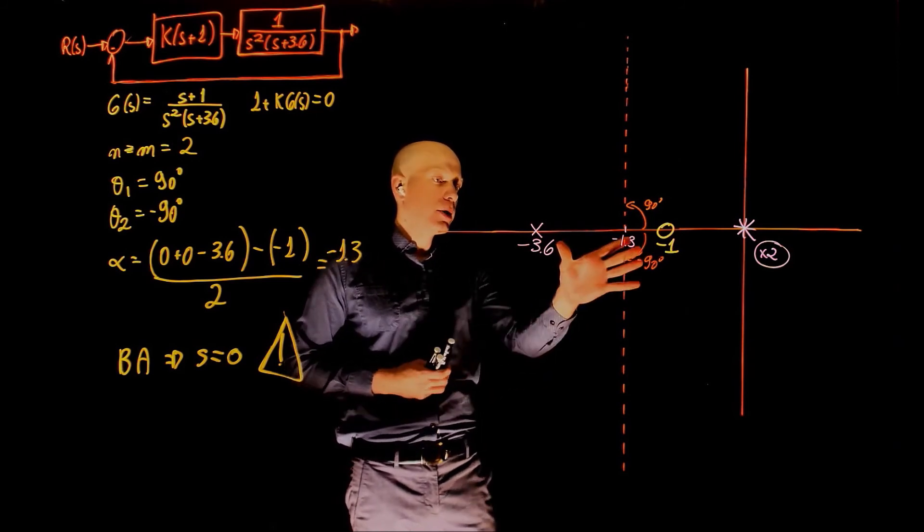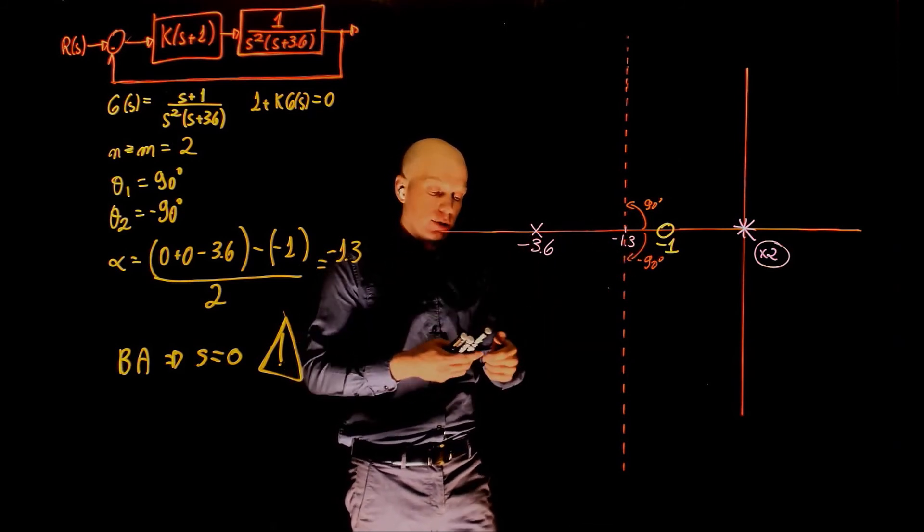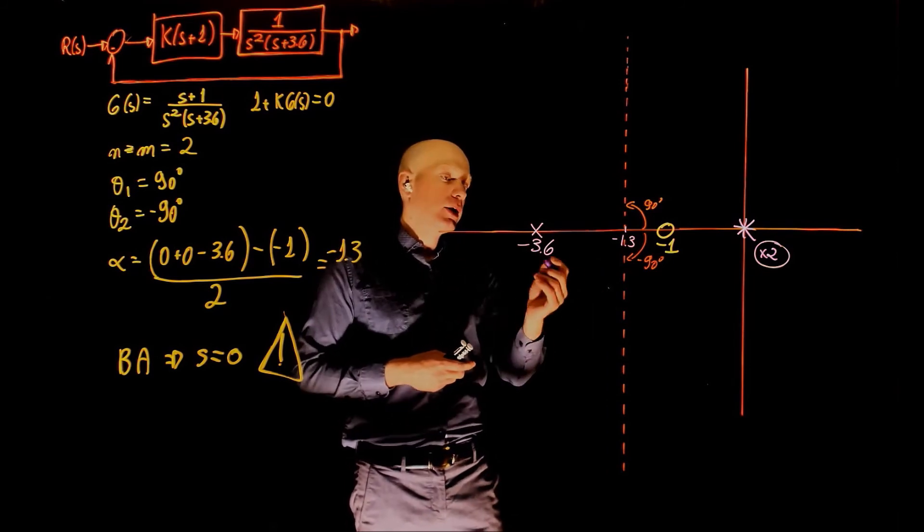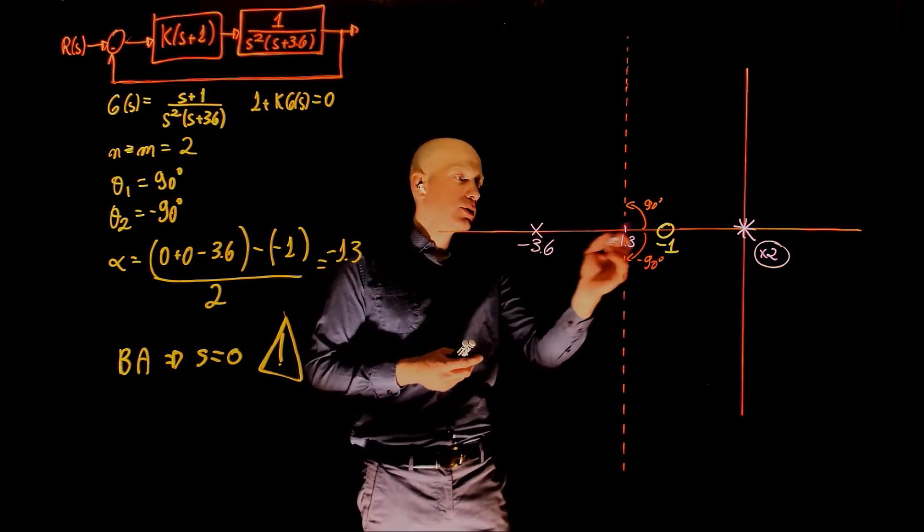So obviously, because this part is occupied and there is a pole and a zero that delineates that part, this pole needs to go to that zero.